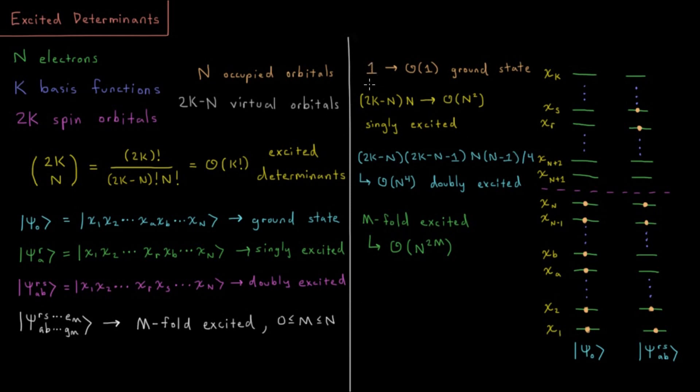All right, so as I mentioned, there's one, or a constant number, order one, ground state. How many singly excited determinants are there? Well, we could have taken any electron from these n and moved it up to any of these 2k minus n excited states. So 2k minus n times n, or if k is growing with n, then we have about a quadratic or n squared number of singly excited determinants.